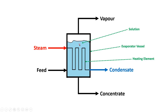As the solution in the evaporator is boiled, it causes vapour to be withdrawn and passed out of the vessel. The solution that remains after removal of the water is often referred to as the concentrate or concentrated liquor, as it will be at a higher concentration than the original feed solution. As the steam passes through the heating coil, it condenses and leaves the evaporator as condensate.